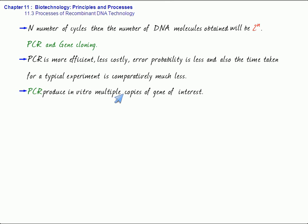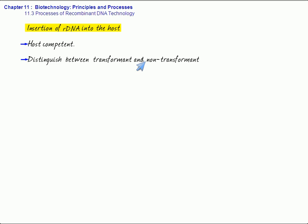The next step in recombinant DNA technology would basically involve the insertion of the recombinant DNA into the host. I have already told you that first we have to make the host competent. And also, we must be able to distinguish between the transformants and the non-transformants.